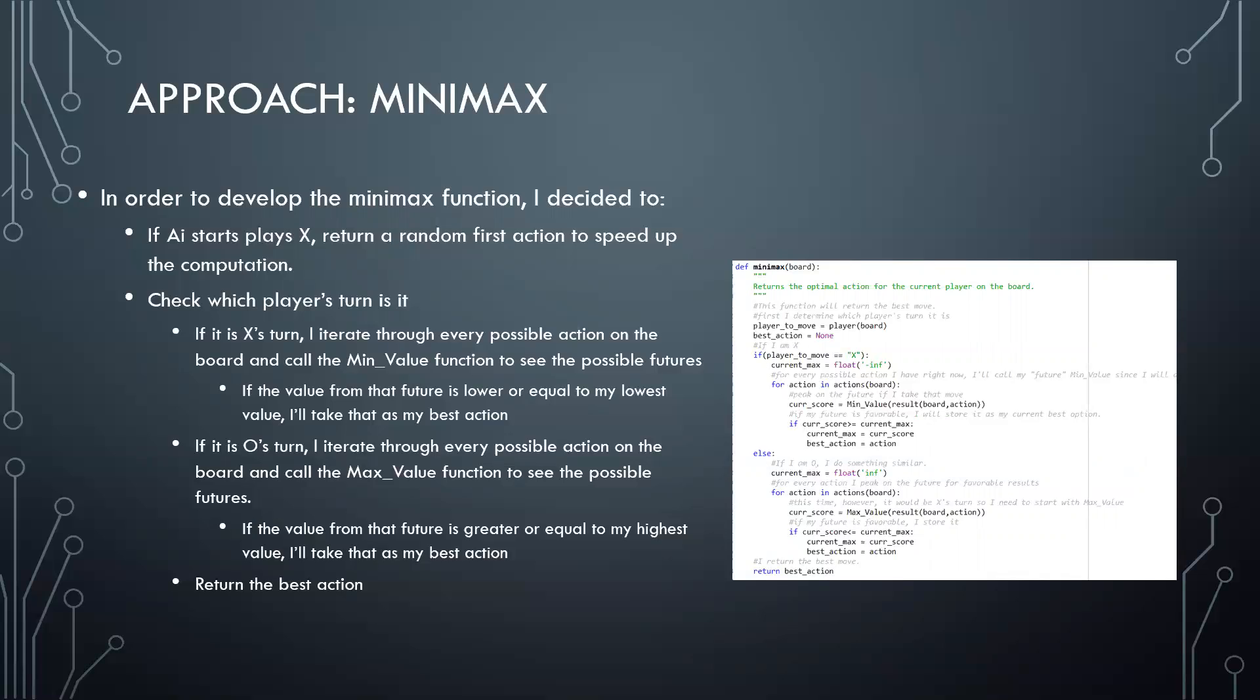On the other hand, if it's O's turn, I go through the same actions, the possible actions on the board, and call the maxValue function because I would be simulating that it is now X's turn. And finally, I return the best possible action.